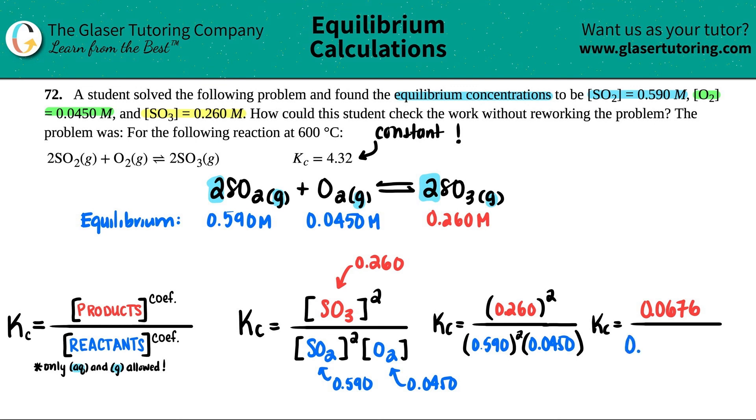And then the bottom, let's see, 0.59 squared times 0.045, I get 0.0156645.